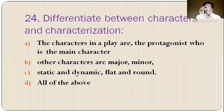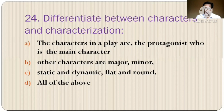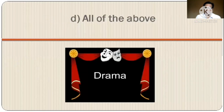Question 24: Differentiate between characters and characterization. The options are: A) the characters in a play are the protagonist, who is the main character, B) other characters are major or minor, C) static and dynamic, flat and round characters, D) all of the above. The correct option is option D, all of the above.